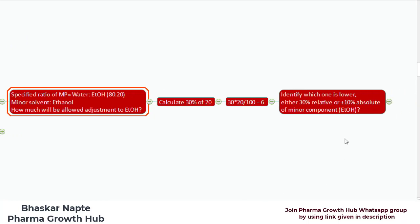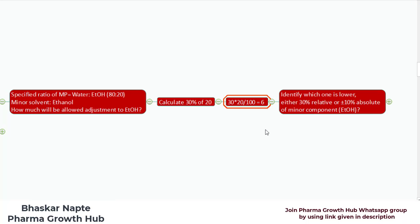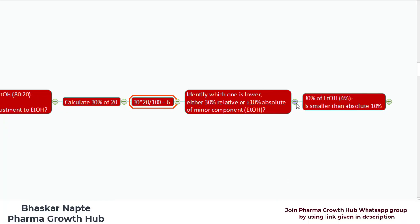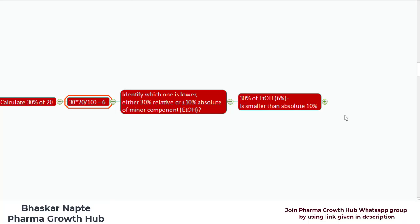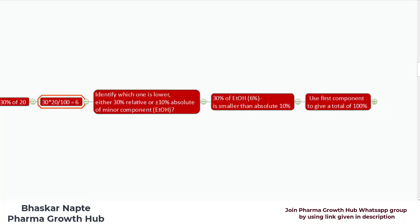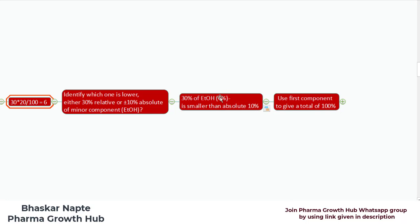Now identify which one is lower: whether 30% relative to the content of ethanol is lower, or whether the 10% absolute content of ethanol is lower. The 30% relative of ethanol is 6%. So which one is lower — relative or the absolute 10%? It is the relative content of ethanol. The 30% relative content of ethanol, which is 6%, is lower as compared to its absolute 10%. As the 30% relative content is lower than the absolute 10%, we need to use the 6% to change the composition of the mobile phase.